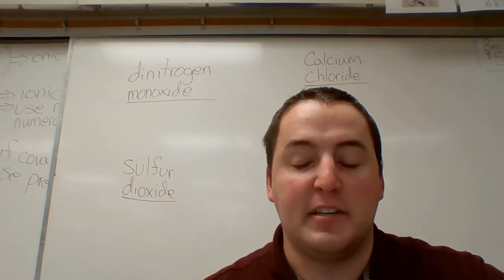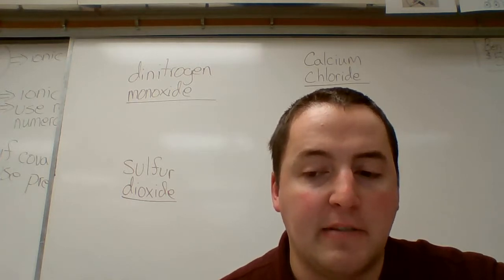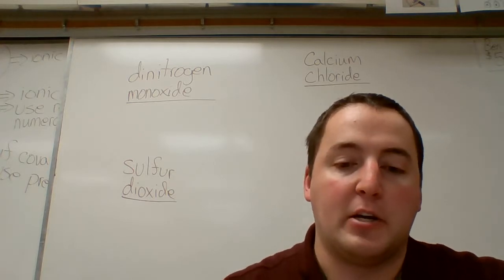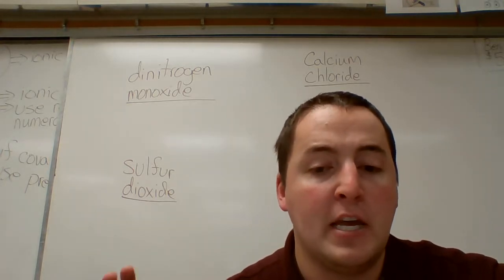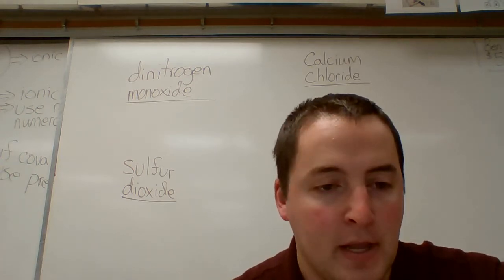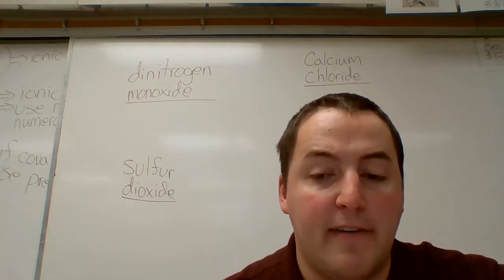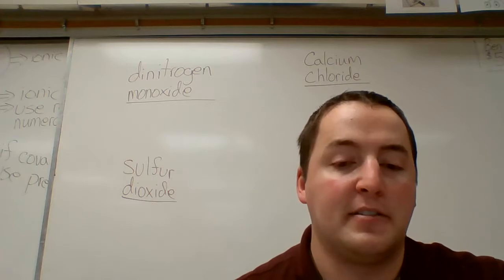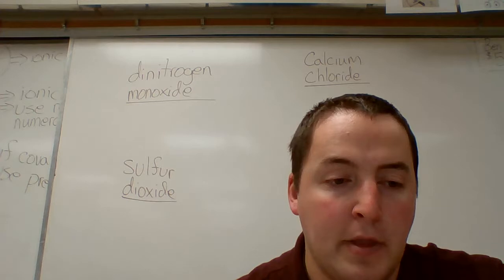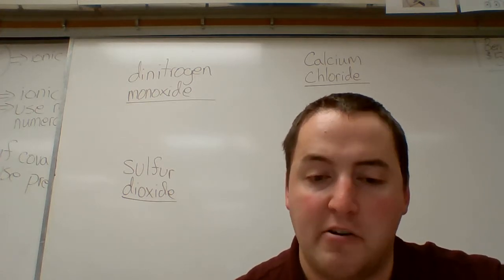Welcome to ICP for today's e-learning. Today, what we're looking at is kind of going in reverse of what we've been doing the last few days. The last few days, we've been looking at going from the chemical formula to the chemical name. Today, we are going to be looking at going from the chemical name to the chemical formula. We're going to start out with a mixture of ionic and covalent compounds, and then we'll add in transition metals and polyatomic ions tomorrow. But today, we're just focusing on simple ionic compounds and simple covalent compounds.